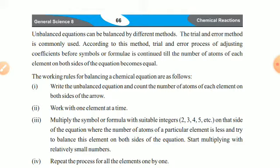In this method, what we do is first adjust the coefficients of our elements until the number of atoms on the reactant side and product side become the same. The working rules of balancing a chemical equation are as follows.